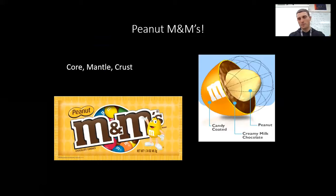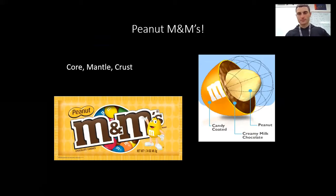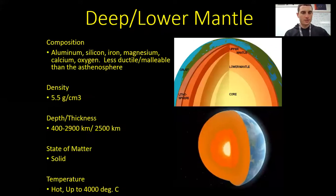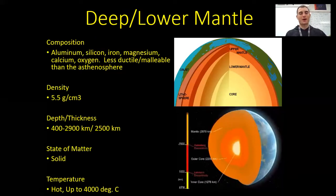In the past, we would pass out peanut M&Ms — but with COVID this year, we could not, obviously. But here's the analogy: mantle, core, crust — peanut M&M. Your peanut is the core, the milk chocolate filling is the mantle, and your candy shell is going to be your crust. Just an excuse to give you guys candy in class before COVID happened.